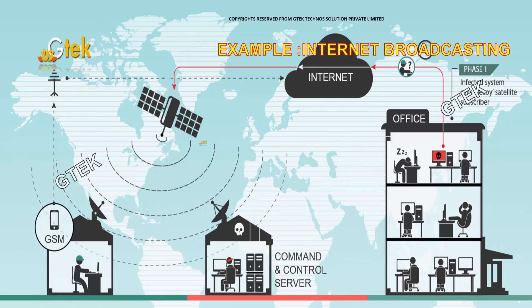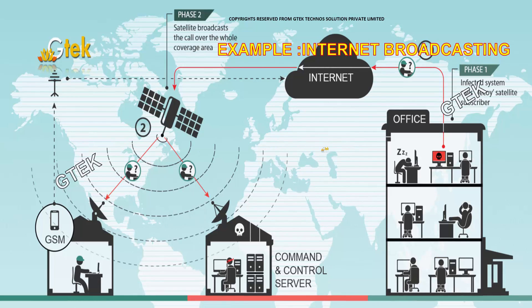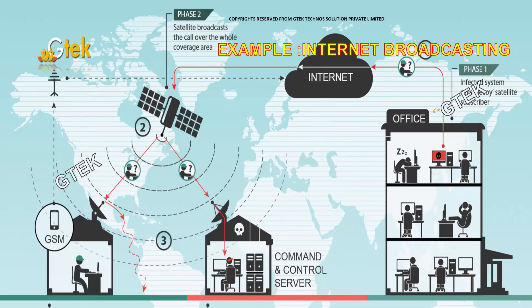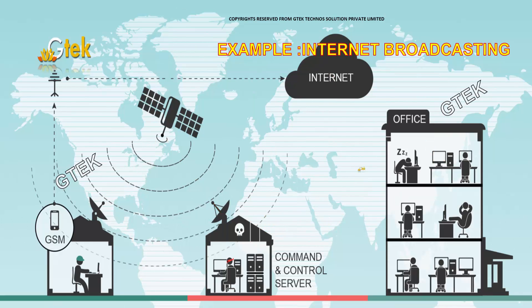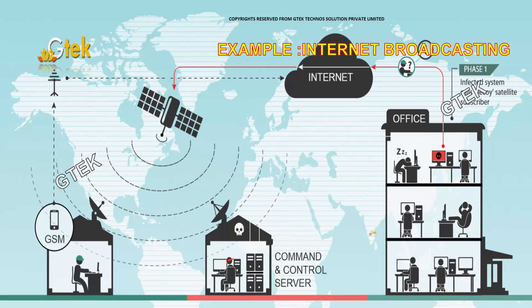A typical example of modulation and demodulation is internet broadcasting. You get your internet, and it is broadcasted — data is transferred between the office and home.